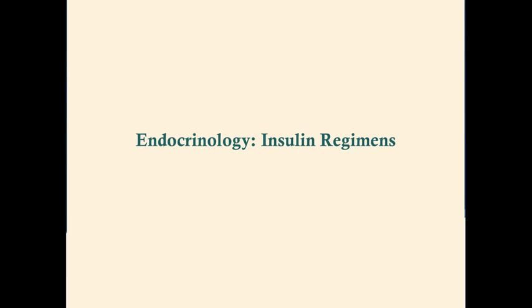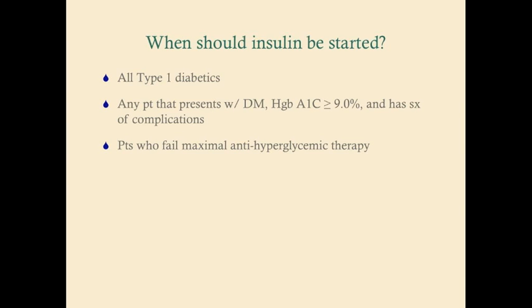We're going to talk about insulin regimens. Who gets insulin? All Type 1 diabetics are on insulin, as well as any patient that presents with symptoms of diabetes mellitus, or who has diabetes mellitus with a hemoglobin A1c above 9 and also has symptoms of complications such as neuropathy, and patients who fail maximal anti-hyperglycemic therapy — we just can't get their glycemic indices down.